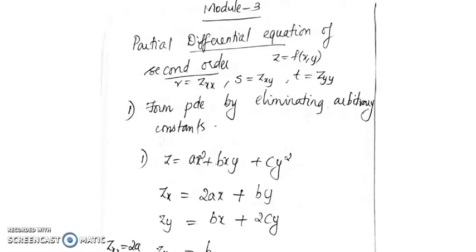In today's class we will look at the formation of second order PDE. For first order PDE formation, if the number of independent variables is the same as the number of arbitrary constants involved, you will get a first order PDE.